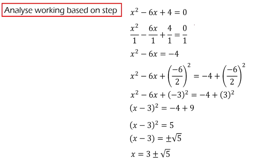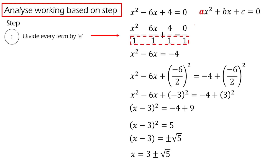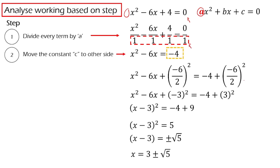Let's take a look at the typical solution for solving a quadratic equation using completing the square. Let's break down this working solution based on the steps I listed. The first step is to divide every term by A. In this equation, our A is 1, so we divide everything by 1. The second step is we move the constant C — in our case it is 4 — to the opposite side, giving us negative 4.